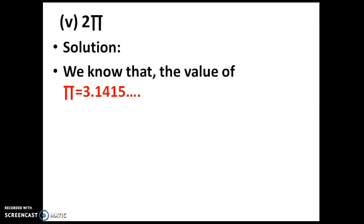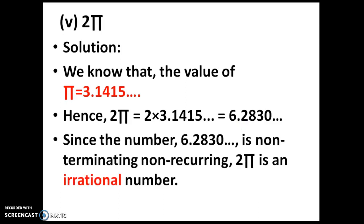We already know π is an irrational number, so any multiplication to the irrational number will be irrational. We have to prove that. π equals 3.1415, so 2π equals 2 times 3.1415 equals 6.2830. Since the number 6.2830 is non-terminating, non-recurring, 2π is an irrational number. This is how we have to prove and write it.